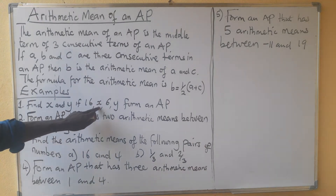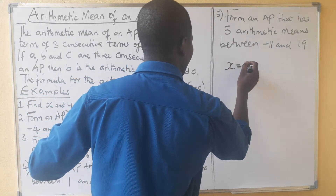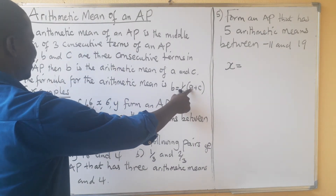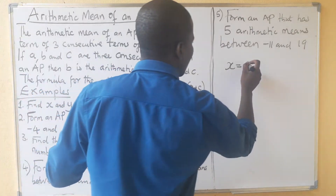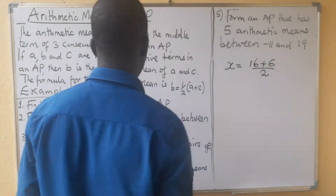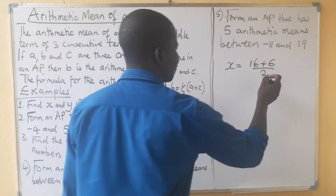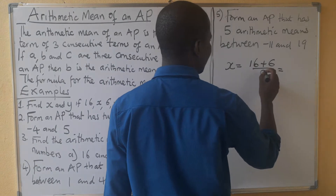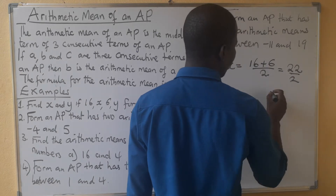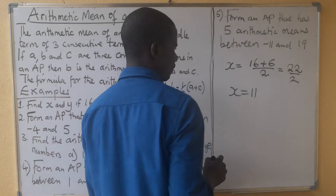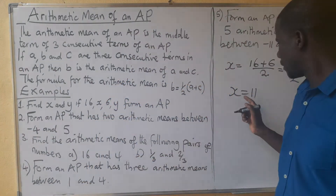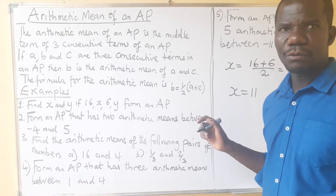Our B in this case is X. So X equals ½(A + C), where A is 16 and C is 6. That gives us (16 + 6) divided by 2, which is 22 divided by 2. We get X equals 11.